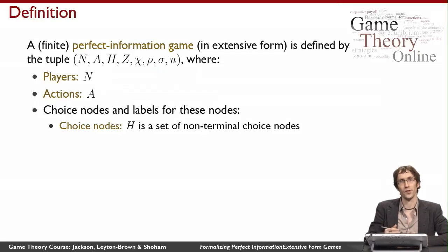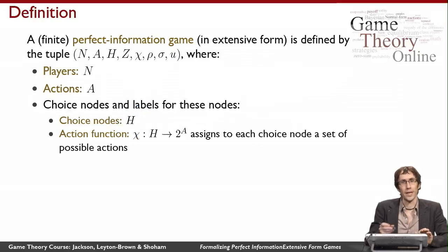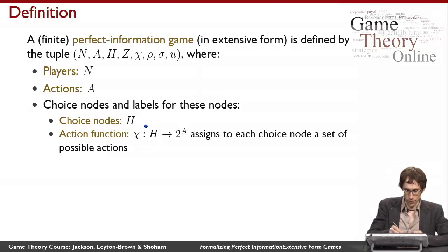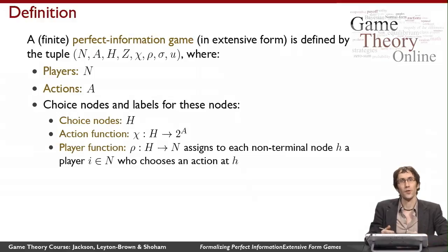We'll start with a set of choice nodes H. These are going to be the nodes in the tree where players take an action. To make the choice nodes work, we need the action function χ, which assigns to each choice node which actions are available to a player in that node. We also have a player function that tells us for every choice node who gets to make the choice in that node.